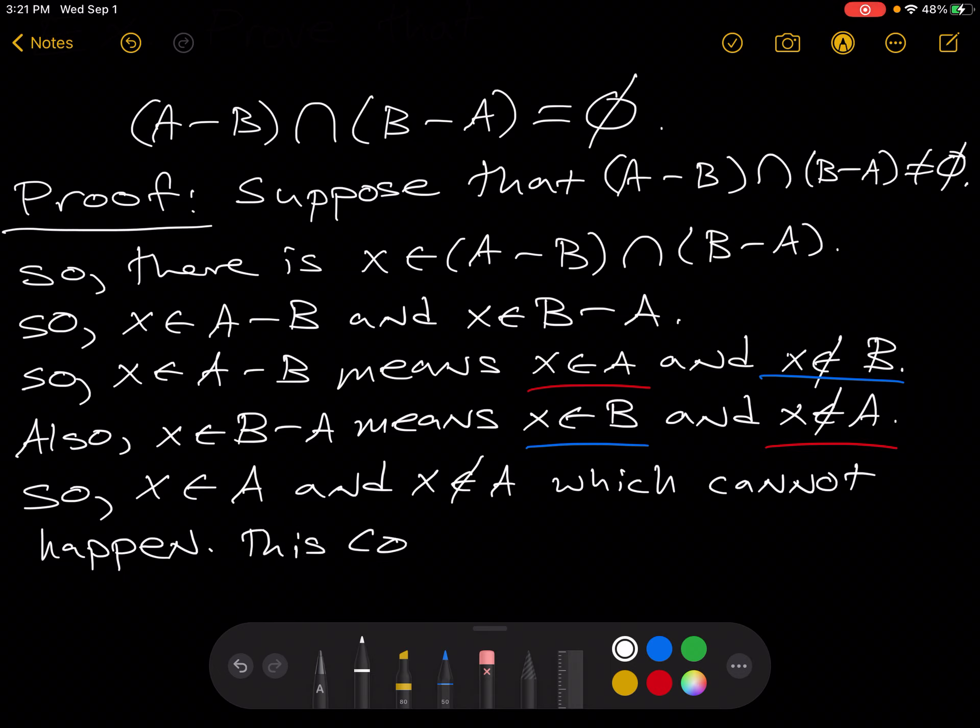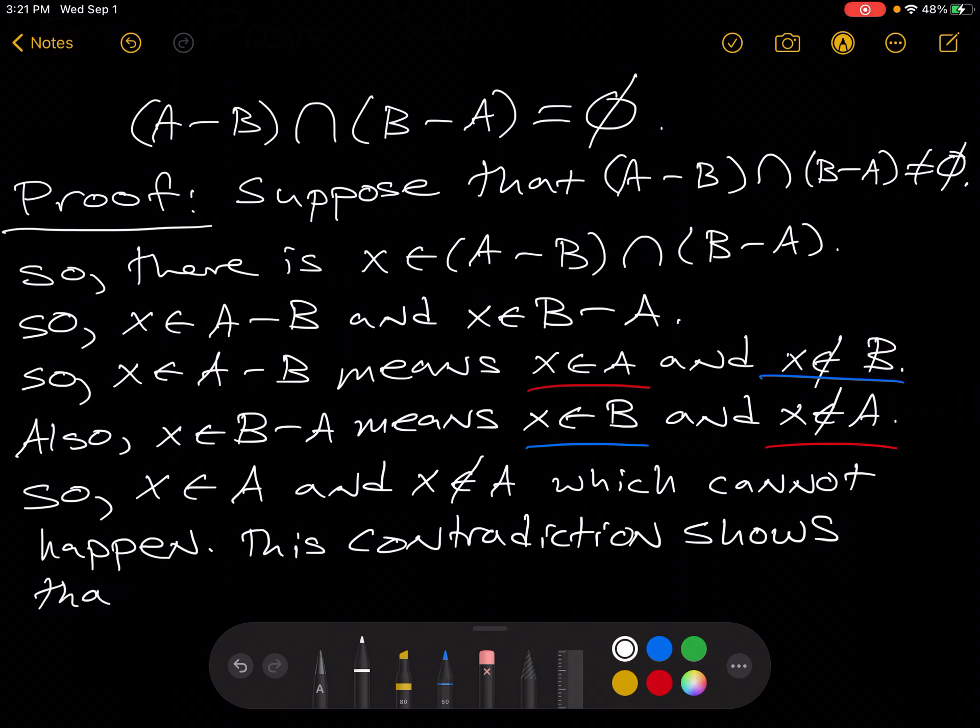So this contradiction shows that the intersection does in fact equal the empty set. And that's our proof.